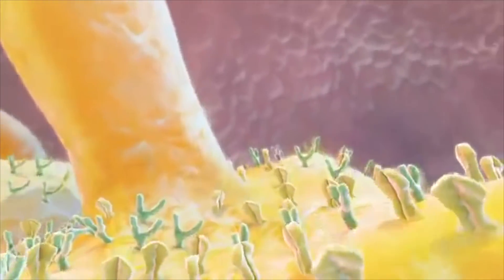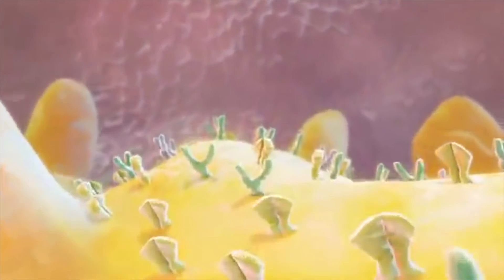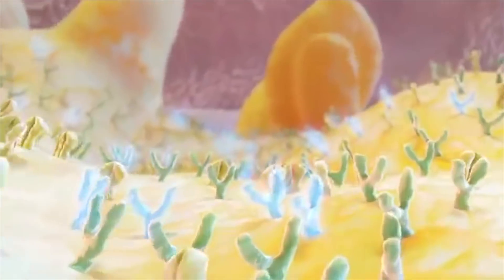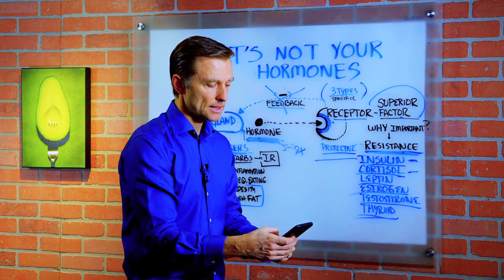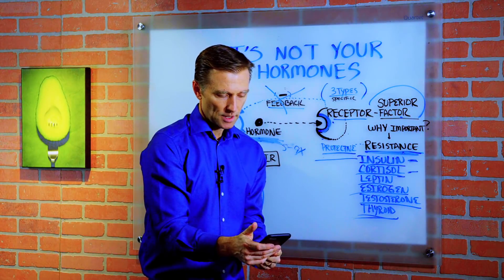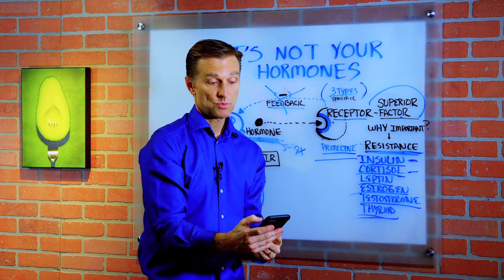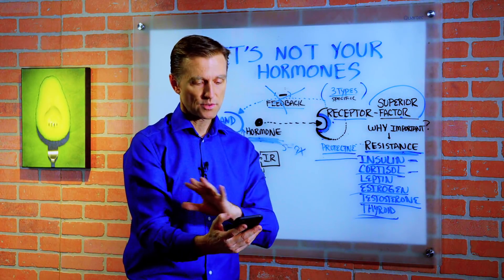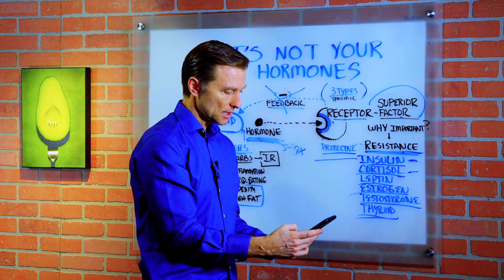So we have this simple communication system that's now very complex. But if you understand the basics, you can see very simply what's happening. For example, looking up insulin resistance on Wikipedia —